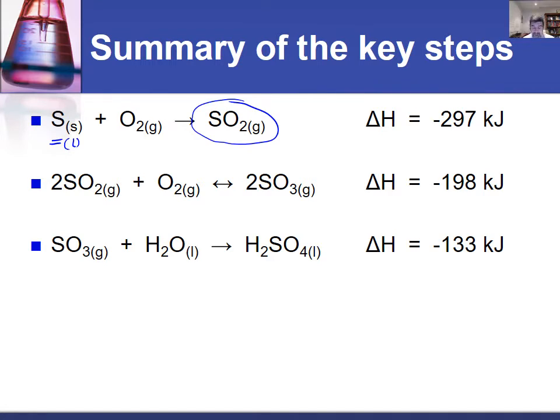But once we have the sulfur dioxide, the second step is an equilibrium that involves sulfur dioxide and oxygen to produce sulfur trioxide. And this process is also known as the contact process and we'll have a look at why that's the case in just a moment.